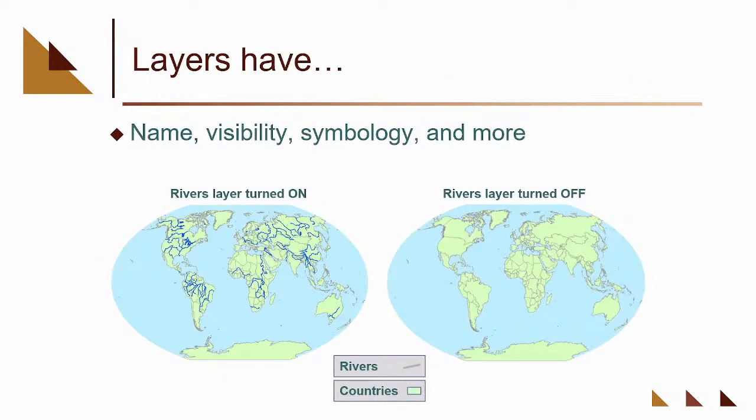On these layers, once you've got theme-based data, in the software we have a name for each layer, we have visibility, and we have symbology. So I can make my rivers blue or make my streets gray or whatever it is. A lot of the software will take care of this and you can turn things on and off.